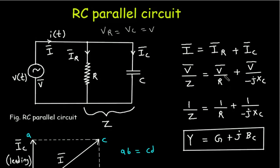Now if we take V common from both terms, this V and this V will get cancelled. What remains is: 1 by Z, and 1 by R, and 1 by minus j·XC. Now, 1 by Z — that is the reciprocal of impedance — is admittance, the reciprocal of resistance is conductance, and 1 by j becomes plus j, and 1 by XC is susceptance — capacitive susceptance, represented by BC.